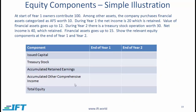To understand the major components of equity, let's look at this simple example. At the start of year one, owners contribute 100 — that is the issued capital. Among other assets, the company purchases financial assets categorized as AFS worth 100. During year one, net income is 20, which is retained, and the value of financial assets goes up to 12. During year two, there is a treasury stock operation worth 20, net income is 40 which is retained, and financial assets go up to 15. Show the relevant equity components at the end of year one and year two.